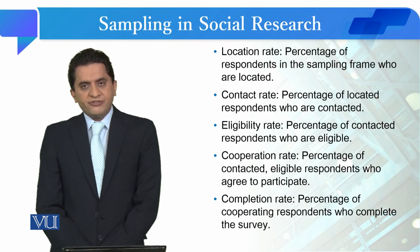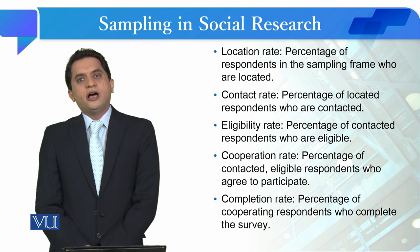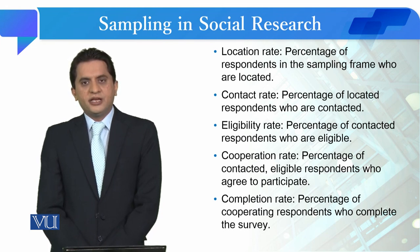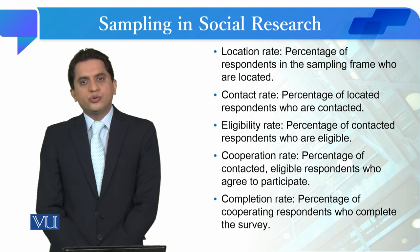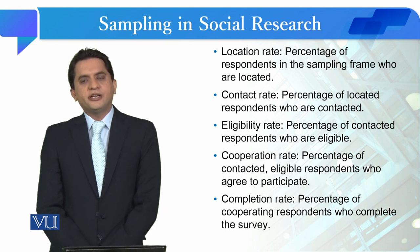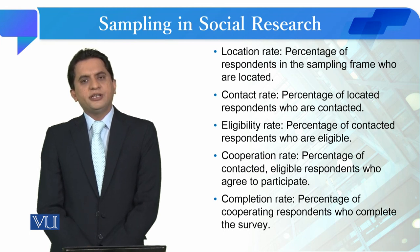When we talk about the location rate, it is the percentage of respondents in the sampling frame who are located. You use the number of participants in the sampling frame who are located. For instance, if you have located 90 out of 99, then you have a 90% location rate.